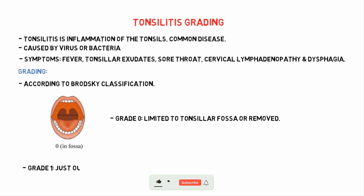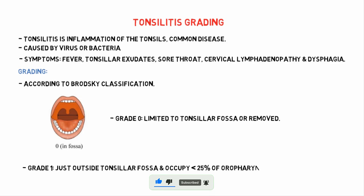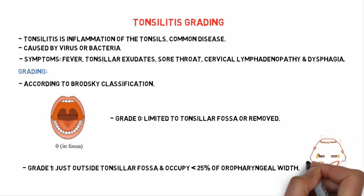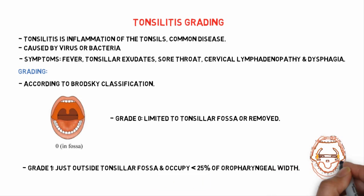The second is grade 1. Tonsils are just outside the tonsillar fossa, occupying less than 25% of oropharyngeal width. They are barely visible and do not obstruct the airway.